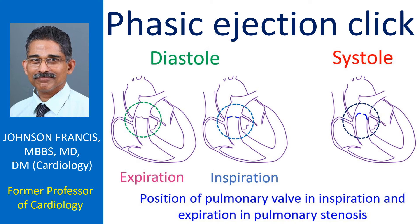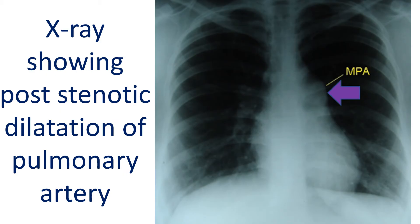Phasic ejection click is the click in pulmonary stenosis when the stiff valve opens. It varies with respiration and is better heard in expiration — it is the only right-sided event which is better heard in expiration. Phasic ejection click is usually associated with post-stenotic dilatation of the pulmonary artery.